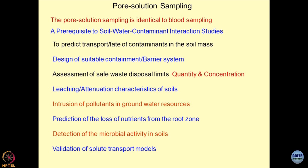Another situation involves microbial activity and its movement in soils. Locations where colonies of microbial activity are surviving in the soil mass can also be detected by pore solution sampling. The technical term for this type of study is flushing of bacteria. Researchers are interested in finding out how microbial activity gets flushed out from soils — you may want to stop microbial flushing to maintain soil health, or flush it out when activity becomes very high to maintain balance.